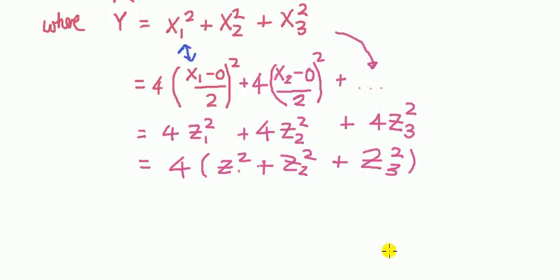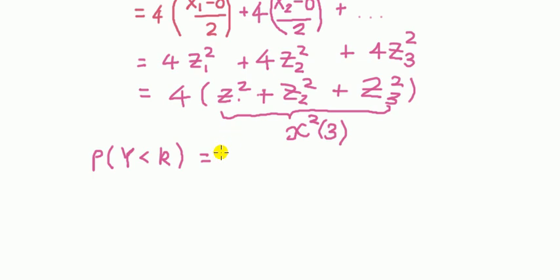So this thing that I've got now is still Y, and it's still all this. However, what we can see now is that this is 4 times standard normals squared and added together. We know that this is going to be chi-squared with 3 degrees of freedom.